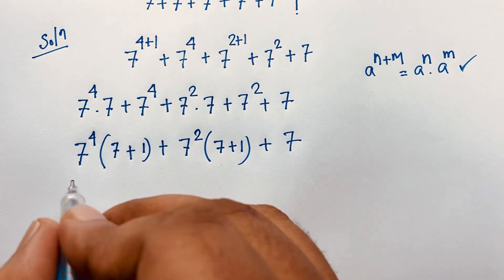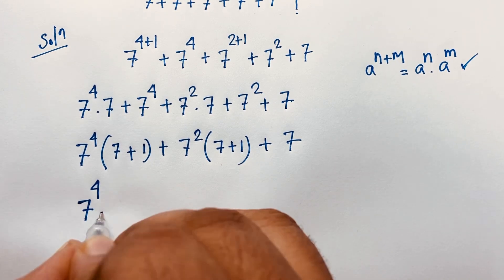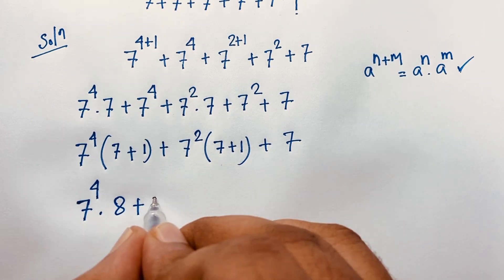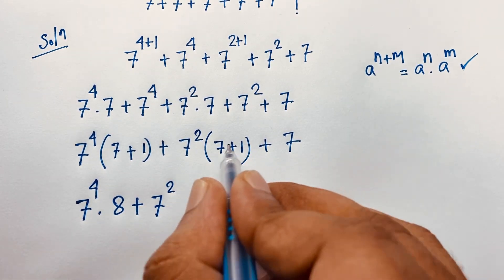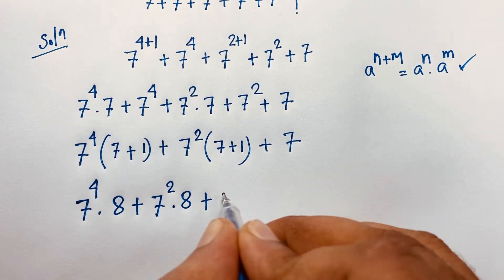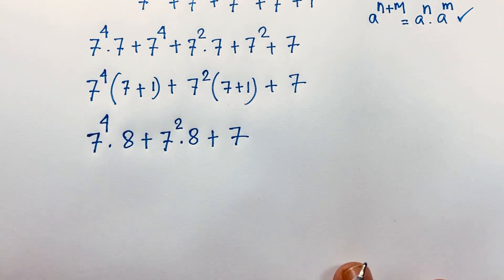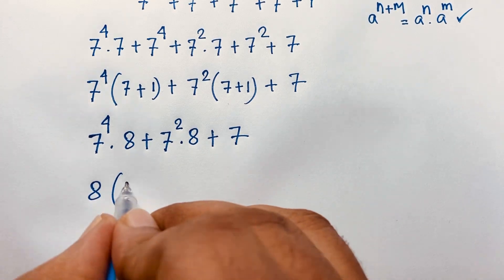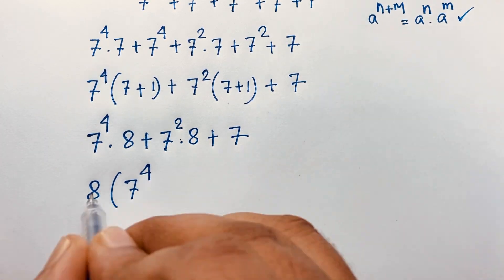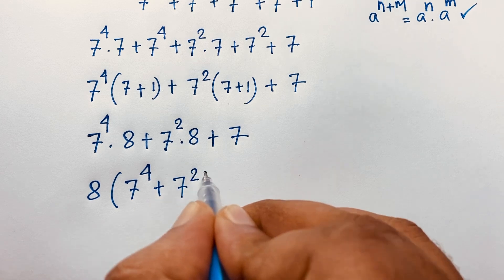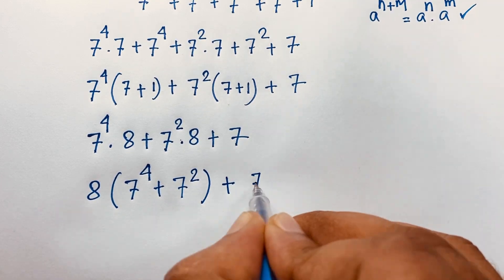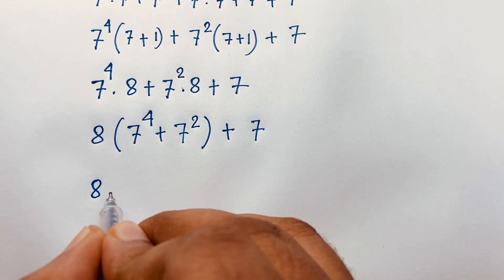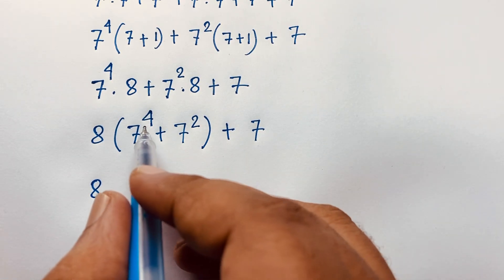Now here 7 to the power 4 times 8 — since 1 plus 7 it will be 8 — plus then here 7 to the power 2 times 8, since 1 plus 7 is also 8, plus 7. Now here 8 is common, so if I take 8 as common: this divided by this it will be 7 to the power 4, this divided by this it will be 7 to the power 2, and here is plus 8 plus 7.